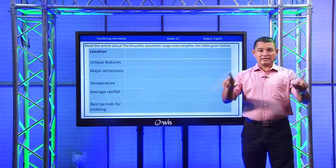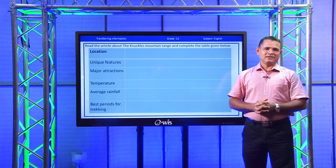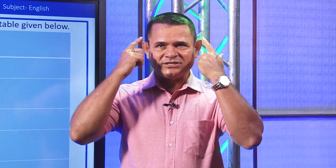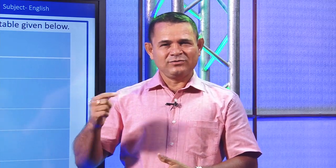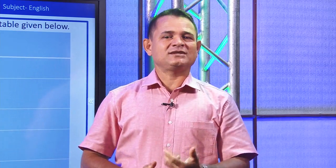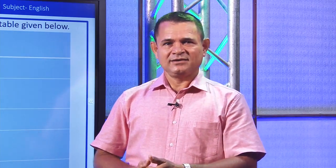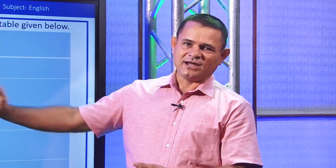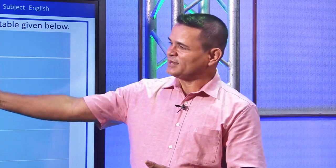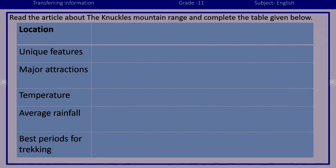Even if you do not understand the complete paragraph, you can do the task — that is what is expected from all our students. One hundred percent understanding of the text is not necessary. There will definitely be new words — do not worry about that; try to guess the meaning. You know it is a big mountain range, so you can get a picture in your mind. With that idea, when you read, you can easily understand even difficult words. That is the skill you need — to infer or get the approximate meaning.